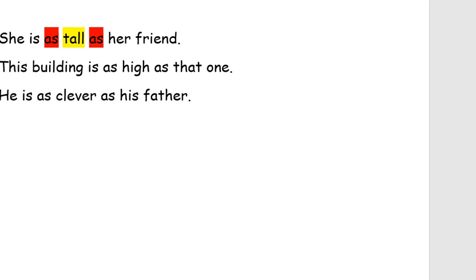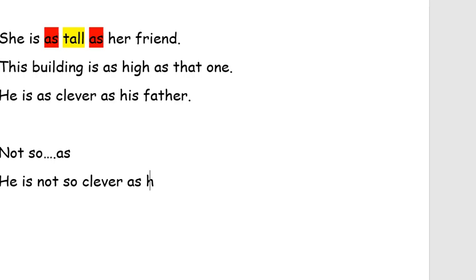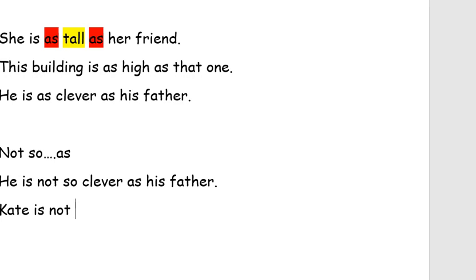Növbəti nümunədə isə müxtəlif keyfiyyətlərə malik olacaq. Yenə orada sifət adi dərəcədə götürüləcəkdir. O zaman not so...as bağlayıcısından istifadə edirik. Deyək ki, o, atası kimi ağıllı deyil: He is not so clever as his father. Burada da biz sifəti adi dərəcədə götürürük. Kate is not so tall as her friend. In this example, the adjective is in the positive degree.